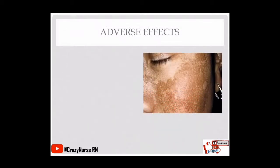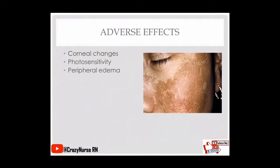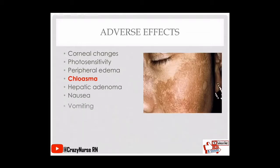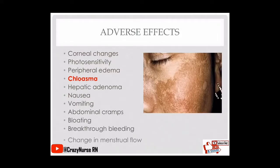The adverse effects of sex hormones include corneal changes, photosensitivity, peripheral edema, chloasma — with a picture embedded in the slide showing what chloasma looks like — hepatic adenoma, nausea, vomiting, abdominal cramps, bloating, breakthrough bleeding, and change in menstrual flow.